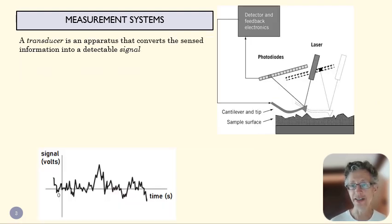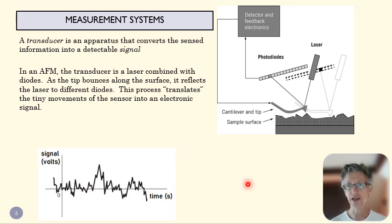Now, that little needle itself doesn't actually tell us anything. We want to turn this into a number. And so we need to transduce that sensed change into something that is quantifiable, into a detectable signal. And so with AFM, what happens is we're dragging this along the surface, it's bouncing. And so we have a laser that bounces light off of this and it hits some photodiodes. And so those diodes can recognize when the laser is hitting them. And so we can use that to determine what positional changes happen to the needle. So the needle itself is the sensor. It senses that surface. The transducer is the laser and the photodiodes that turn that into an electrical signal.